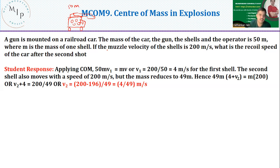The M is the mass of one shell. If the muzzle velocity of the shells is 200 meters per second, and all surfaces are frictionless, then when you fire, the shell will go like this and by recoiling this will go backwards. What is the recoil speed of the car after the second shot? First time you shoot, the vehicle moves backwards. Second time as the vehicle is moving backwards, you're again shooting it. So the speed of the vehicle increases. This is the question.